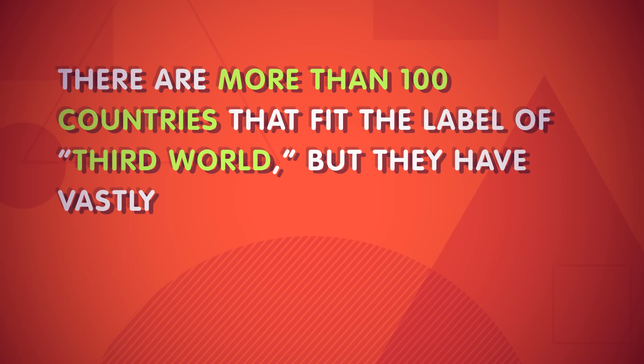But in addition to being seriously outdated, these terms are also inaccurate. There are more than a hundred countries that fit the label of Third World, but they have vastly different levels of economic stability. Some are relatively poor, but many aren't. So lumping Botswana and Rwanda into the same category doesn't make much sense, because the average income per capita in Botswana is nine times larger than in Rwanda.